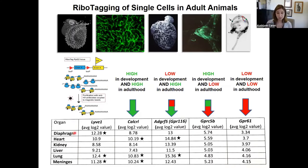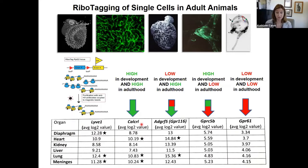LIV1, the reporter, is highly enriched, shown as log2 values, in lymphatic endothelial cells of different organs. Our positive control, CalcRL, the receptor I mentioned, is also highly enriched in heart, lung, and meninges — very consistent with the phenotypes we know from our mouse models.